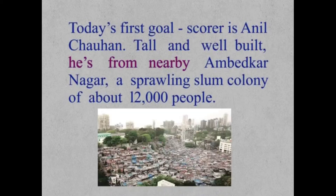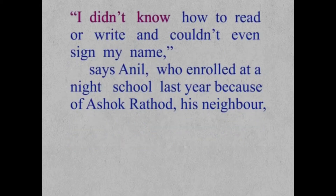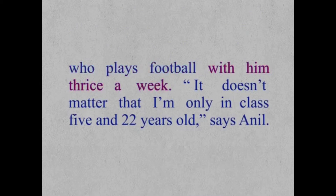Ashok isn't just playing for his team, nor is he the fastest or most skillful footballer, yet the boys in both teams follow his lead. Today's first goal scorer is Anil Chauhan — tall and well-built, he's from nearby Ambedkar Nagar, a sprawling slum colony of about 12,000 people. Anil had, like many poor urban kids, dropped out after a few years of primary schooling. Years later, working as a housekeeper in a bank, he realized his mistake.